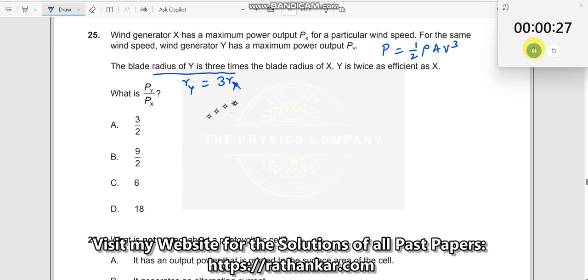Now, what is PY by PX? That is the question. So if I consider X is eta times efficient, then we can write PY equals 2 times eta times P0, and PX equals eta times P0.